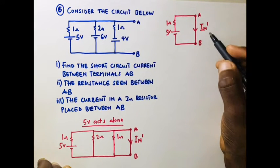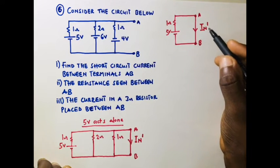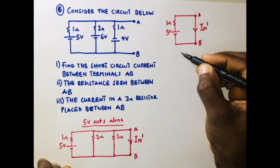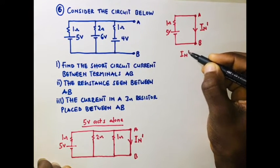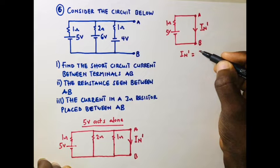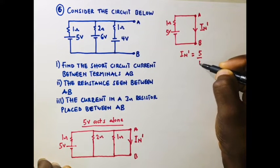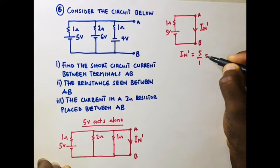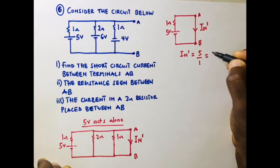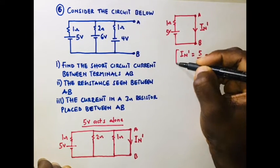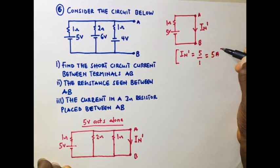The simplified circuit has the 1-ohm resistor connected to the 5-volt source with the short circuit current iₙ′. Using Ohm's law, iₙ′ = 5 divided by 1, so iₙ′ equals 5 amperes.